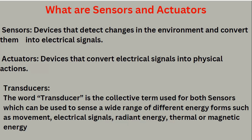Now, the third part is called transducers. The word transducer is a collective term used for both sensor and actuator, which can be used to sense a wide range of different energy forms such as movement, electrical signals, radiant energy, thermal or magnetic energy. Transducers also convert one form of energy to another form of energy — like speakers, microphones — these are all transducers.